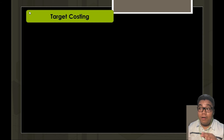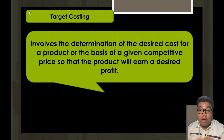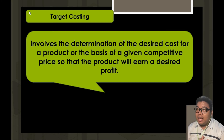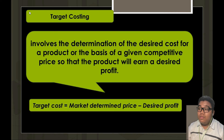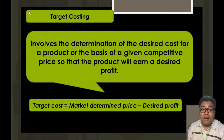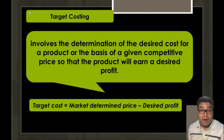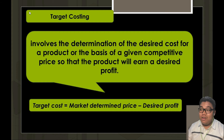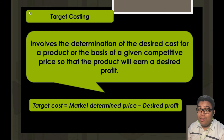Next is target costing. This is a concept wherein we develop a cost that we target to incur for the product we are preparing, so that we can achieve a desired profit and the desired selling price. This is applicable when a product is sold competitively in the market. For example, if cupcakes are sold at 25 pesos in the market and we want to earn 10 pesos profit per cupcake, we only need to spend 15 pesos for production. If the actual cost comes out to 17 or 18 pesos, we will not be able to reach the target profit.